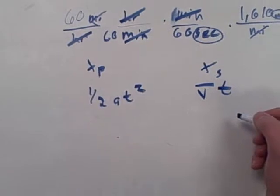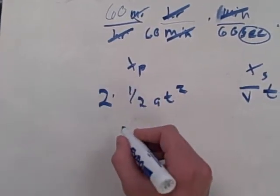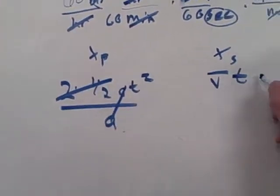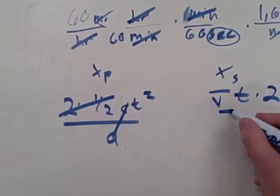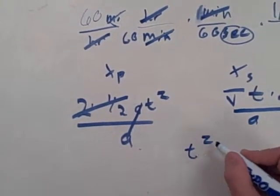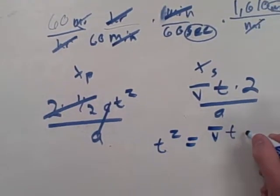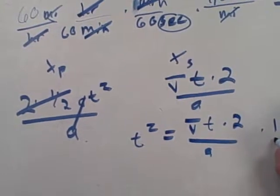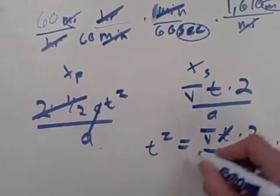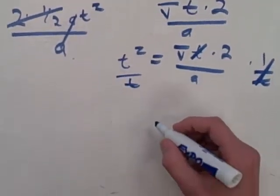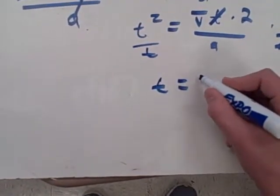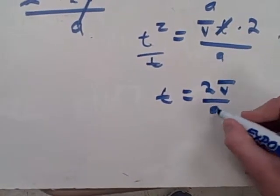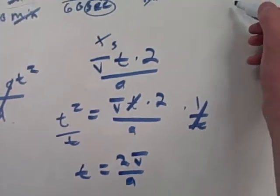So you will multiply this by 2 and divide by a, and this will cancel out. Then you do the same thing on this side, multiply by 2 divide by a. So now you're left with t squared equals vt times 2 all over a. You're gonna divide by t so these cancel out, and then t equals 2v over a. And v is 26.833 meters per second.